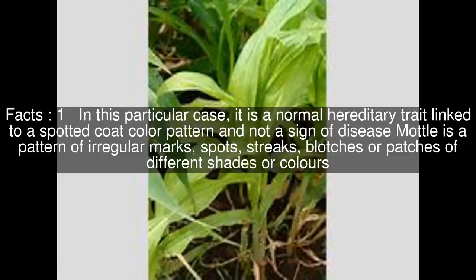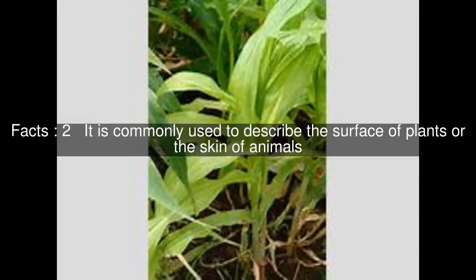In this particular case, it is a normal hereditary trait linked to a spotted coat color pattern and not a sign of disease. Mottling is a pattern of irregular marks, spots, streaks, blotches or patches of different shades or colors. It is commonly used to describe the surface of plants or the skin of animals.